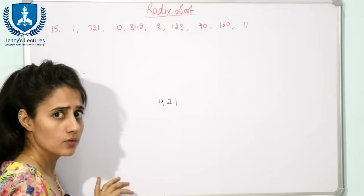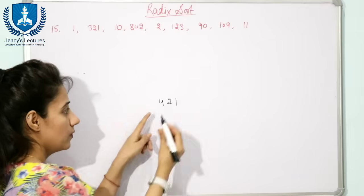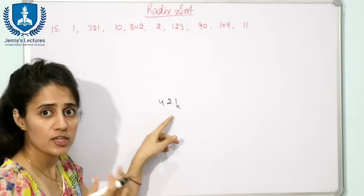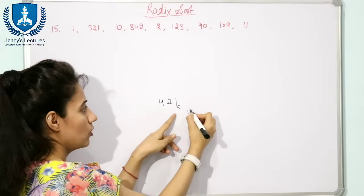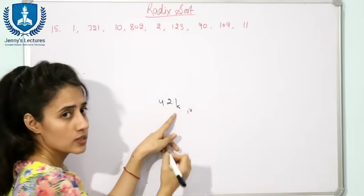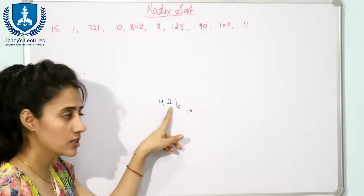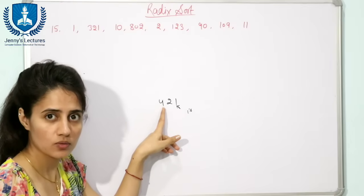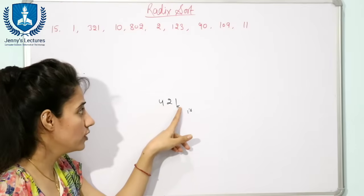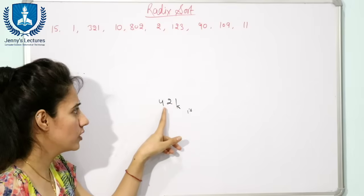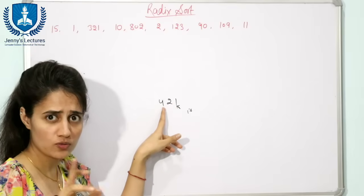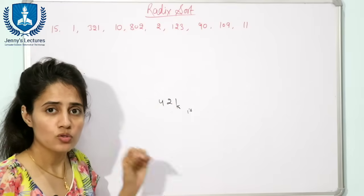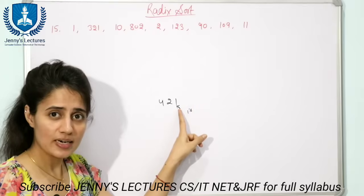Suppose we are taking the number 421. The place value of 1 is the ones place, the place value of 2 is the tens place, and the place value of 4 is the hundreds place. The face value of 1 is 1, face value of 2 is 2, and face value of 4 is 4. I hope you know what face value and place value are.